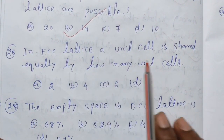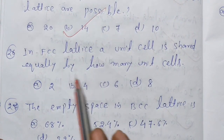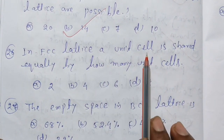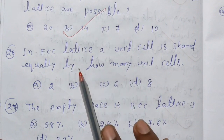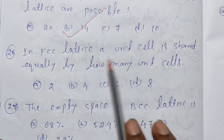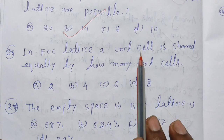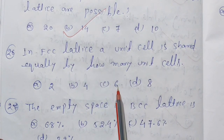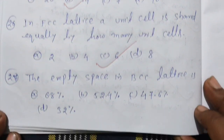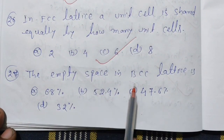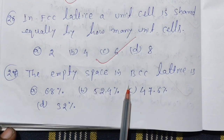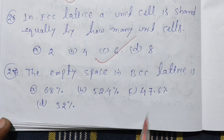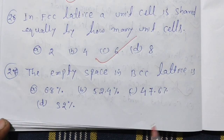In an FCC lattice, a unit cell face atom is shared equally by how many unit cells? In FCC crystal, each face-centered atom is shared by 6 unit cells. The empty space in a BCC lattice: if you subtract the packing fraction from 1, the empty space is 32 percent.